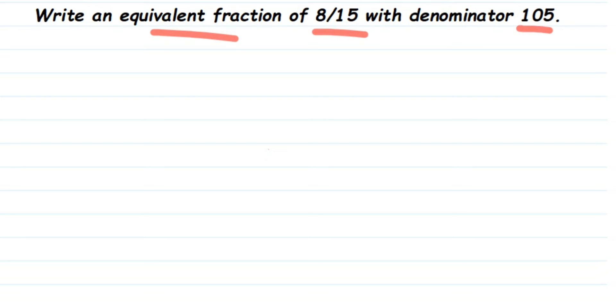Let us write down the number. We have 8/15. Now to get the equivalent fraction, there are two ways - one is multiplication and the next one is division. So here if you see, we want the denominator to be 105.